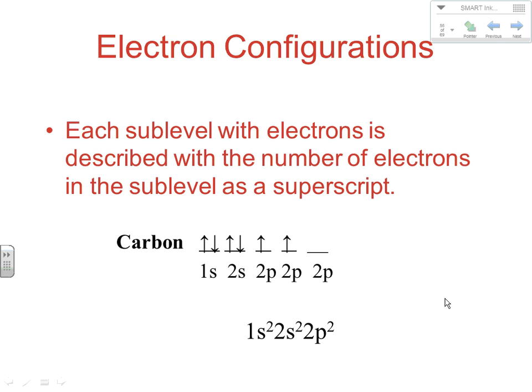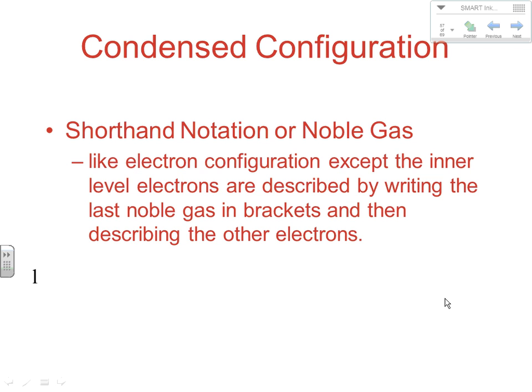Each sub-level with an electron is described with a superscript showing the number of electrons. For carbon, which has six electrons total, it would be written as 1s², 2s², 2p² — by Hund's Rule, the first two 2p orbitals each have one electron. It's quicker to do but shows less information, so we sacrifice a little bit of detail.